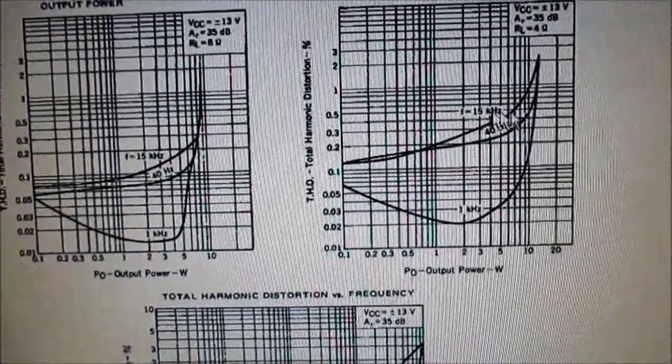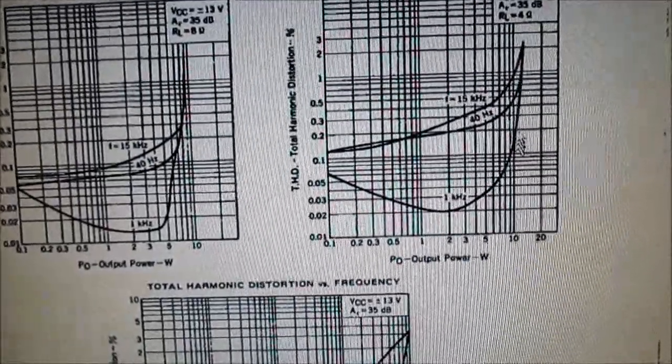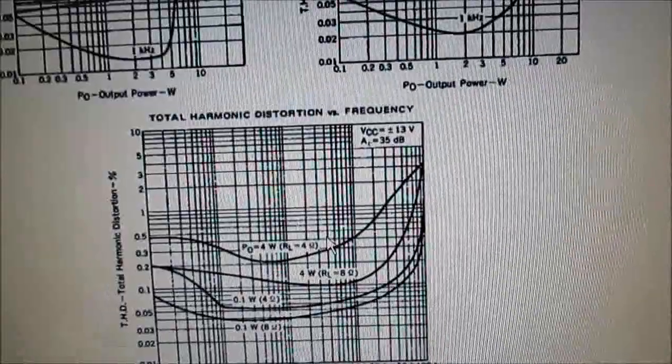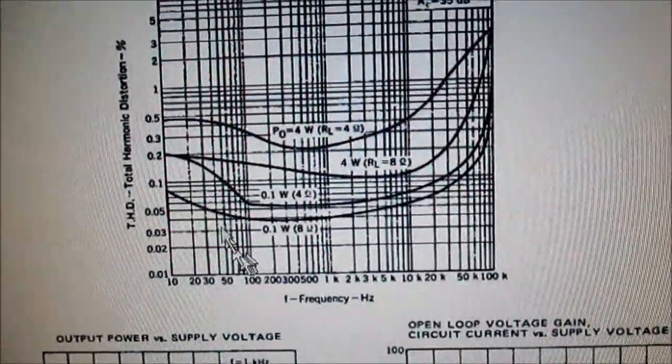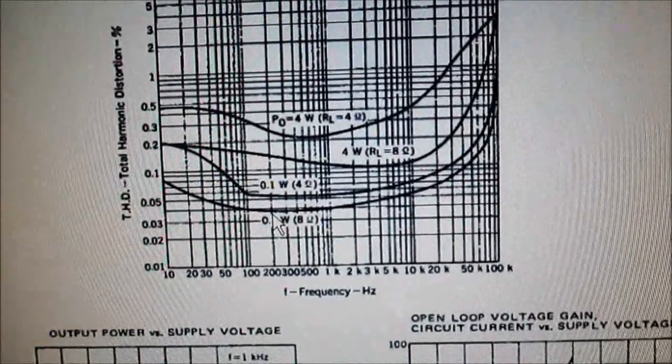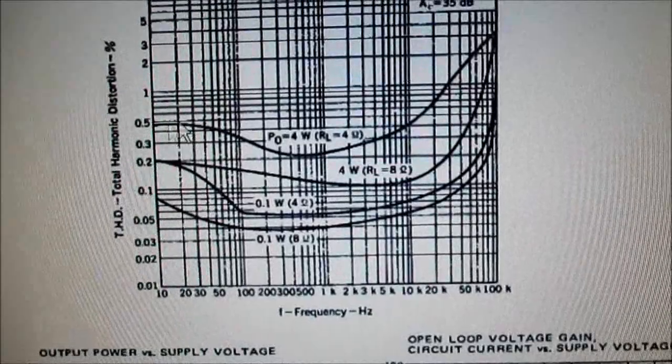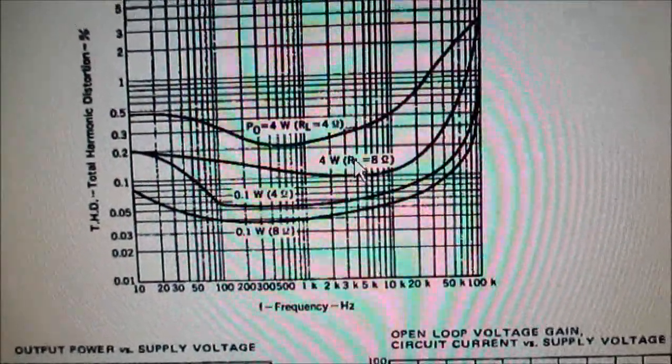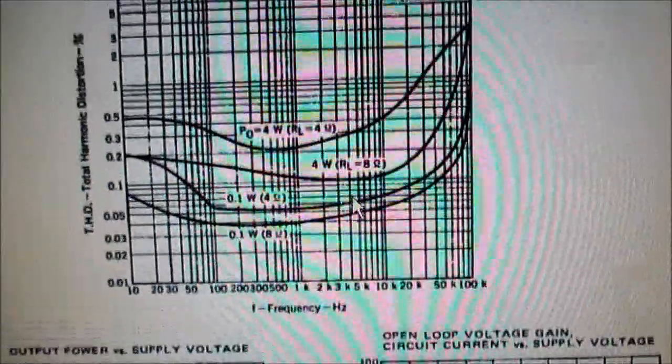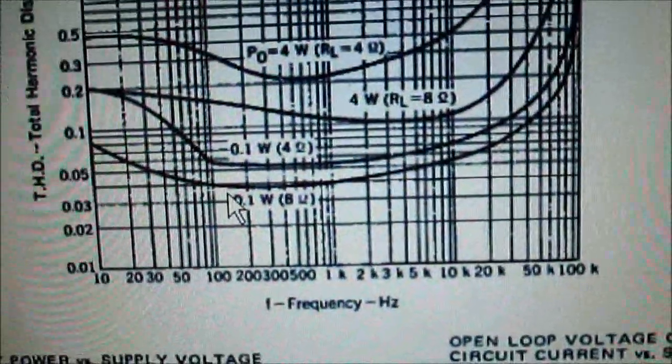At 4 ohms, it's of course going to be a little bit worse. But still, it's well below 1. Of course, when it starts to clip, it's going to start shooting vertical. Here's the frequency band distortion figures. And again, it's not real great.